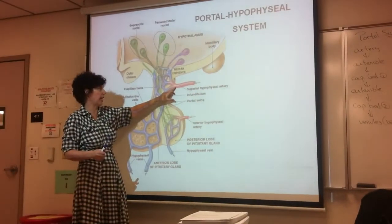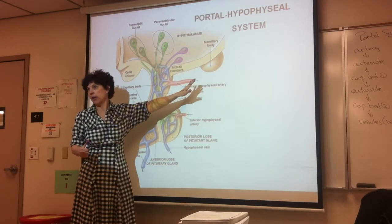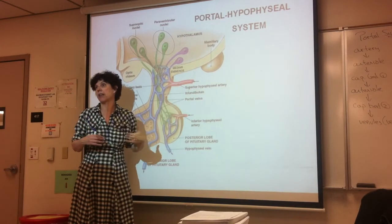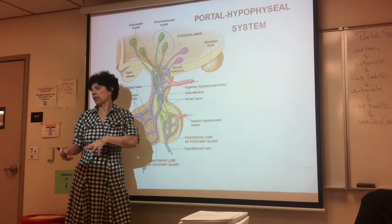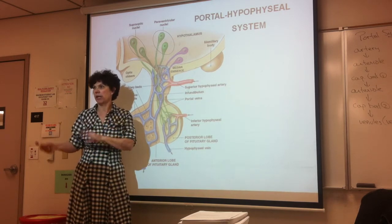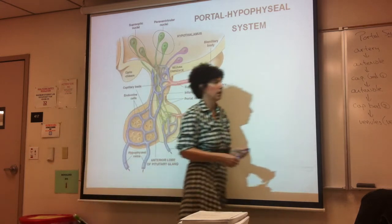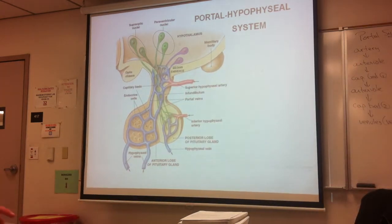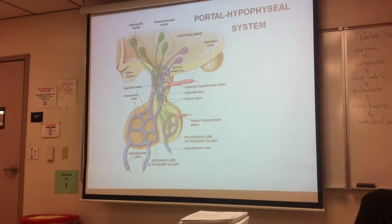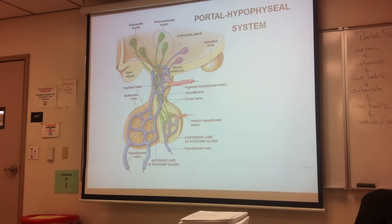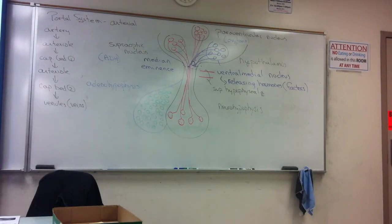We're looking at the portal hypophyseal system. Here comes the blood vessel to the hypothalamus carrying various amounts of hormones from other organs in the body: estrogen, progesterone, thyroid hormone, and cortisol from the adrenal gland. That vessel coming in is the superior hypophyseal artery. The inferior hypophyseal artery goes to the posterior pituitary gland.